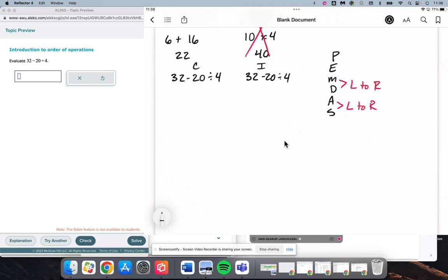So the correct way is going to be able to look at the order of operations and say, are there any parentheses? No. Are there any exponents? No. Multiplication or division? Yes. I have division right there. So we would first do 20 divided by 4, which is 5. Then 32 minus 5 and get 27.